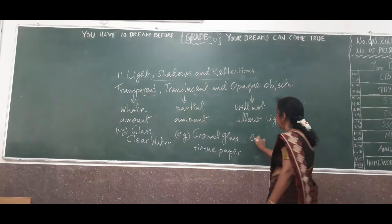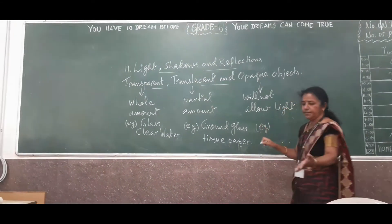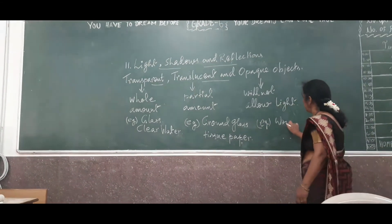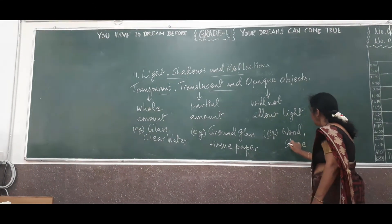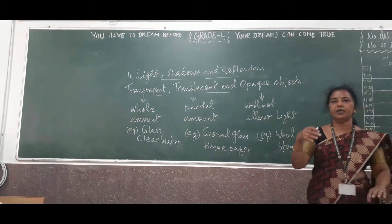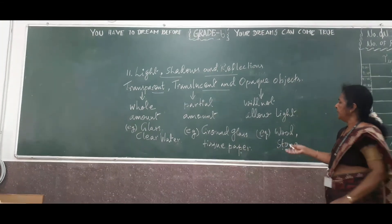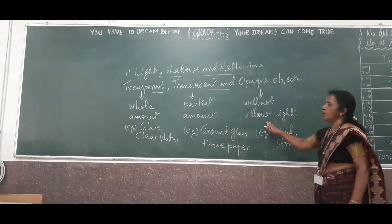And here, the example, you can give various examples: wood, stone. Which are all the objects which are not allowing the light to pass through them? It is called as the opaque objects.